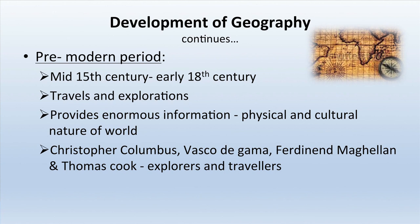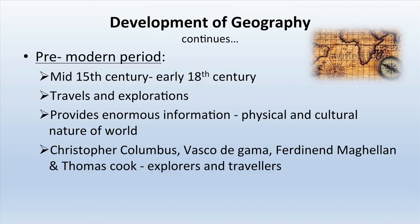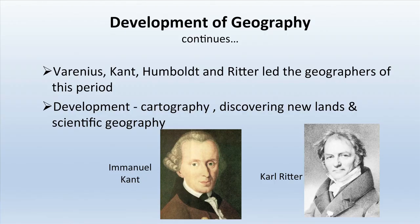The pre-modern period extended from mid-15th century to the early 18th century. During this period, lots of travels and explorations provided enormous information about the physical and cultural nature of the world. Famous explorers included Christopher Columbus, Vasco da Gama, Ferdinand Magellan, and Thomas Cook. Geographers of this period were Varenius, Kant, Humboldt, and Ritter. Development was mainly in cartography, discovering new lands, and scientific geography.